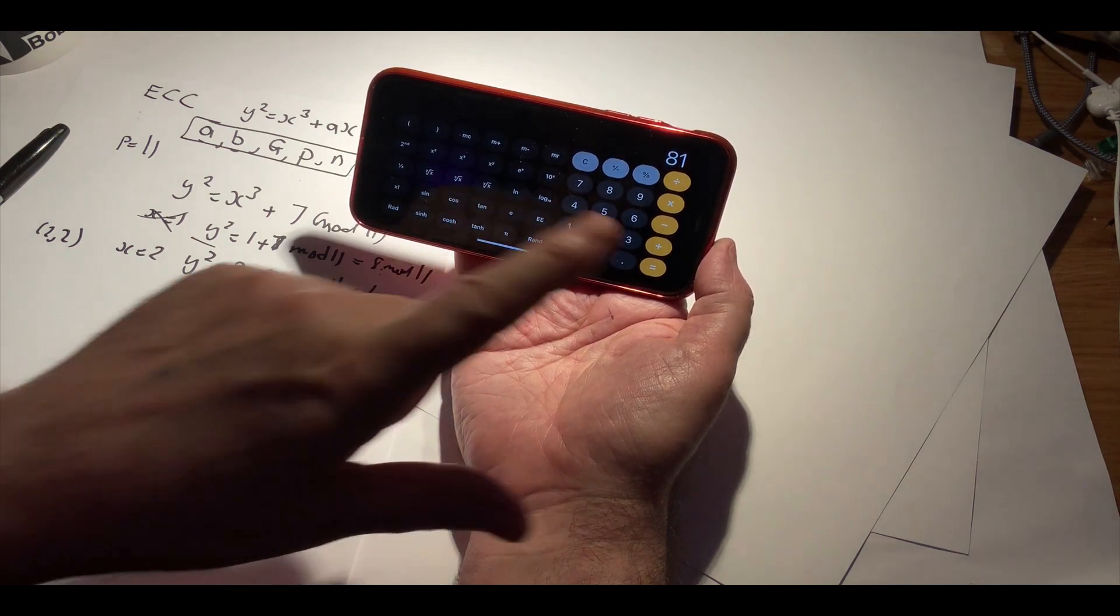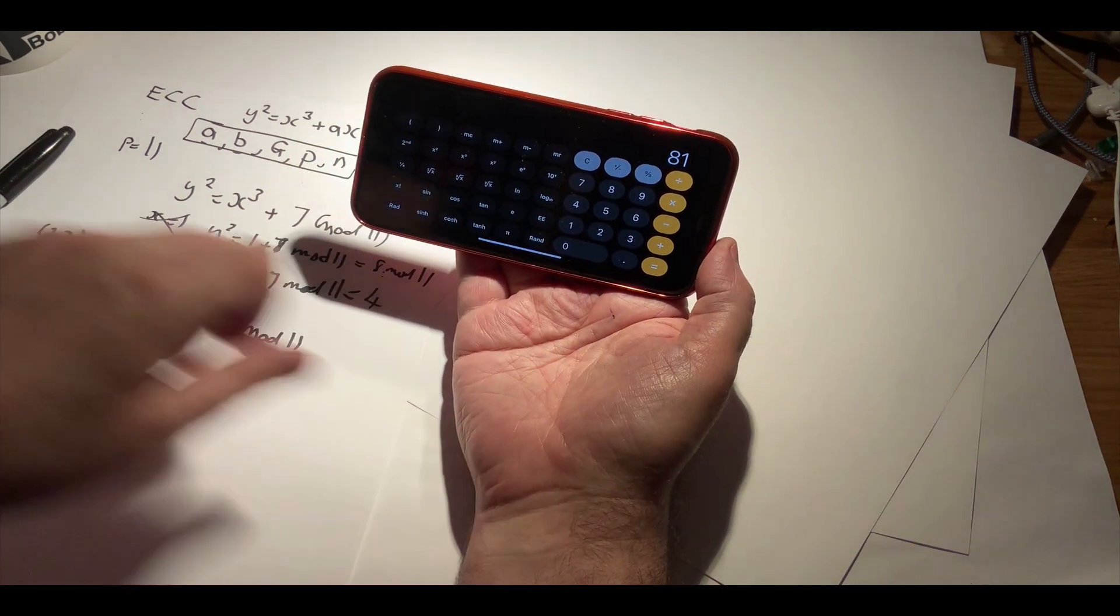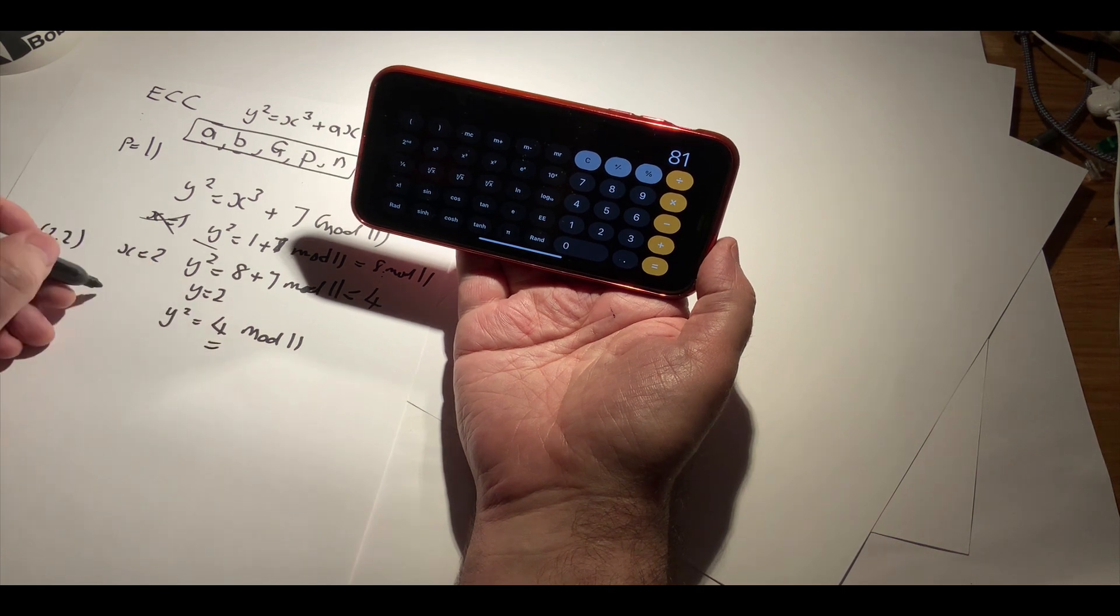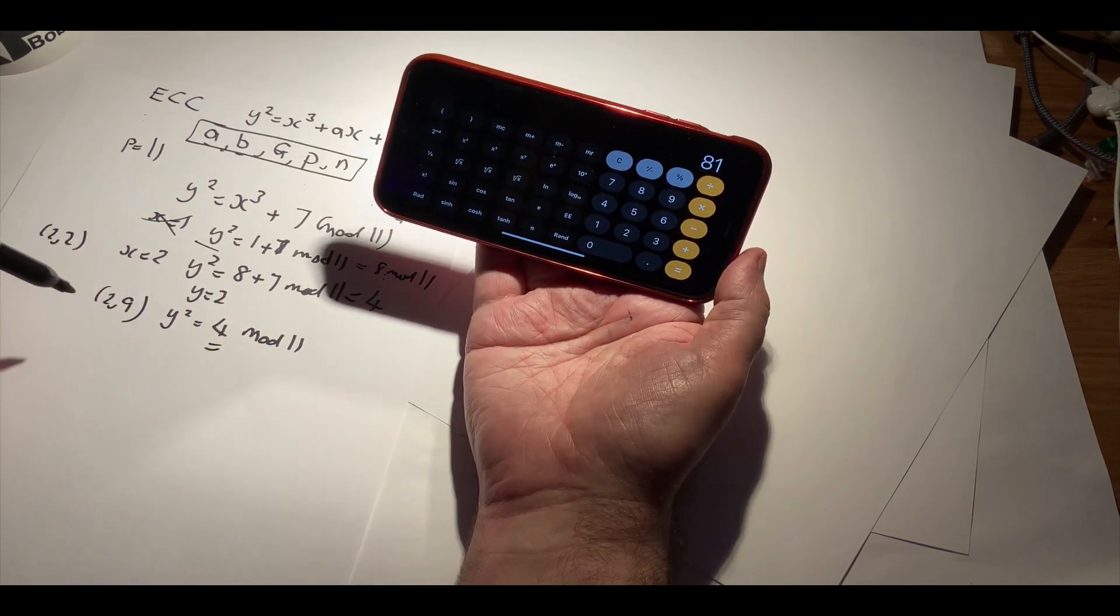So you can see here that the other value that we'll have is 2 comma 9.